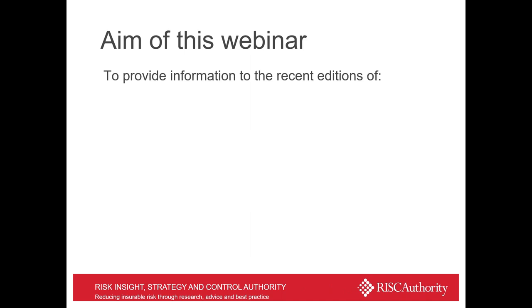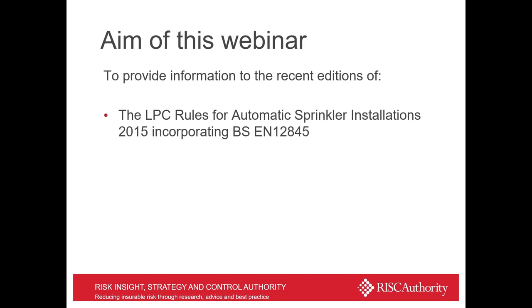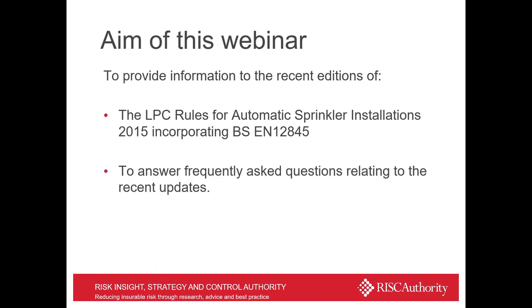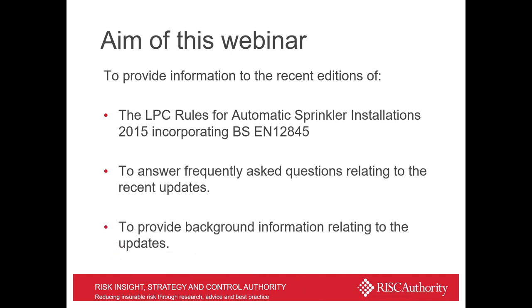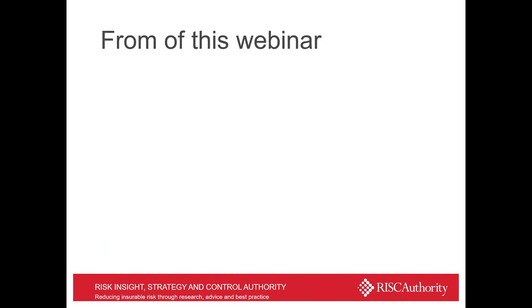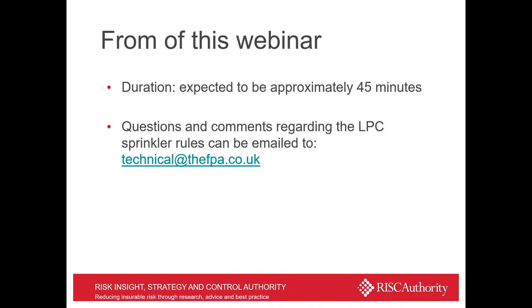The aim of this webinar is to provide you all with information on the recent additions. These came out in early 2019 — the LPC Rules for Automatic Sprinkler Installations Incorporating BSCN 12845. The questions may have some relevance to 12845, but the majority are on the LPC technical bulletin updates. We expect it to run for approximately 45 minutes. Questions and comments regarding the LPC rules can be emailed to technical@thefpa.co.uk at any time.